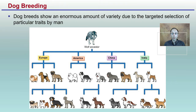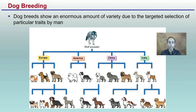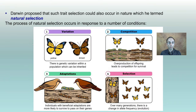Dog breeding is another example. Dog breeds show an enormous amount of variability due to the targeted selection of particular traits by humans. If the wolf is the common ancestor, Europe, America, China, and India have all bred for different subsets of that selection process, but they can all be traced back to the common wolf ancestor.